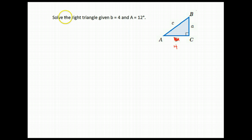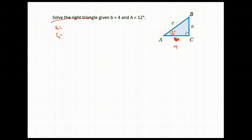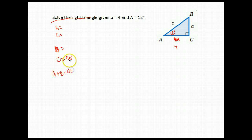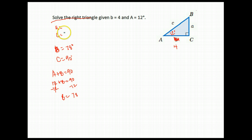This time we're given that side B is 4, and we're asked to solve the triangle. We were given length of side B and angle A is 12 degrees. The parts we do not know are sides A and C, and angles B and C. Angle C right off the bat is the right angle, so it's 90 degrees. Since angles A and B add to 90, and A is 12 degrees, angle B equals 78 degrees.